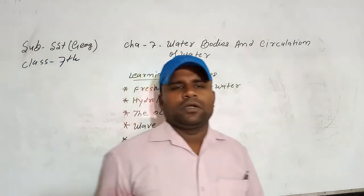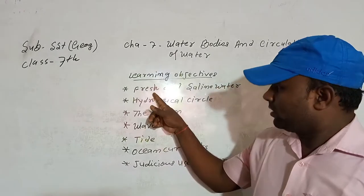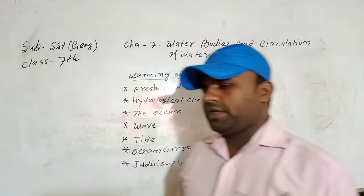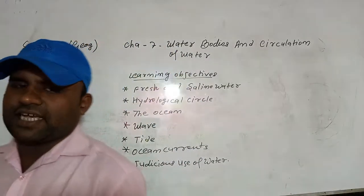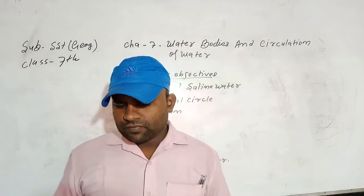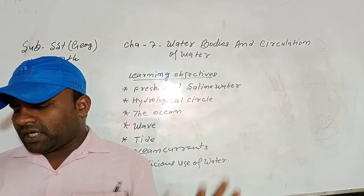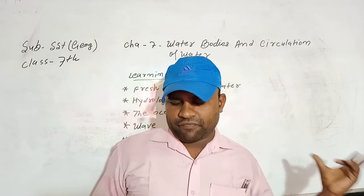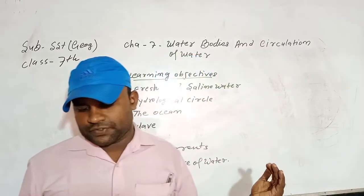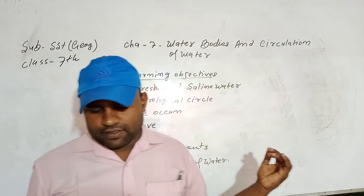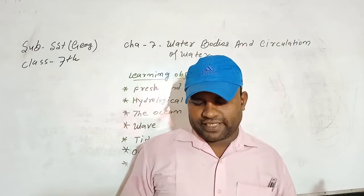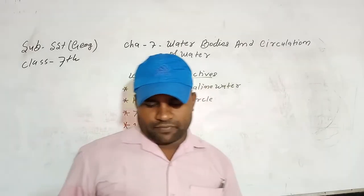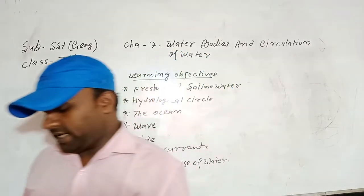Fresh, now, now come to the point, fresh and saline water. Students, fresh means pure, saline means salty. The water available on the earth's surface is two types, the fresh water and the saline water. 97% of earth's water is found in oceans, which is saline. 2% is found in glaciers and ice caps, and 1% of the water is found in rivers, streams, and lakes.